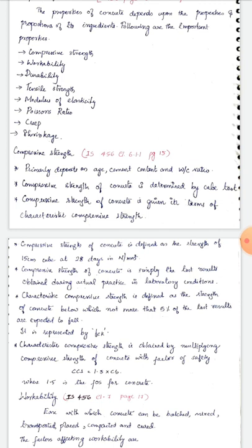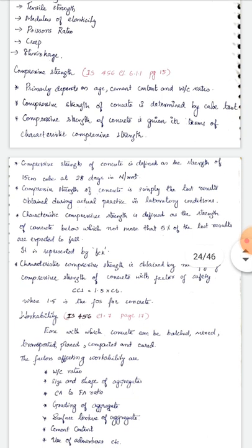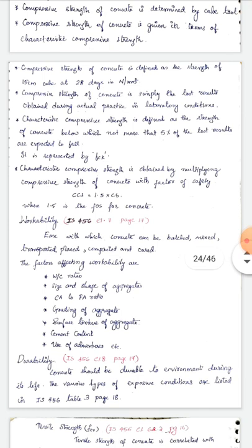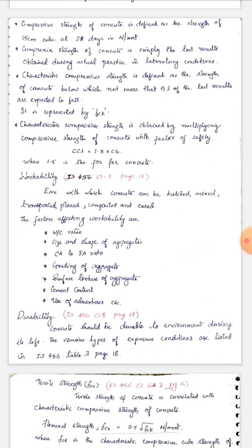Compressive strength of concrete is given in terms of characteristic compressive strength. It is defined as the strength of concrete below which not more than 5% of test results are expected to fall. It is represented by fck.